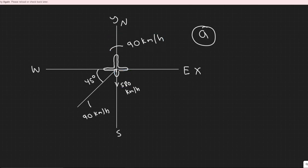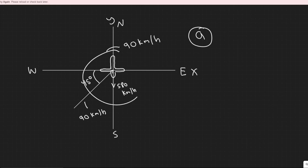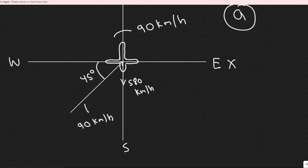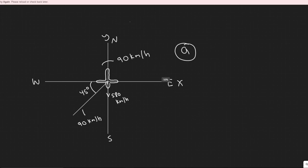Once we have all components summed, we can use a formula to get their magnitude, which will be the magnitude of the speed of the plane. We're looking at two components. One is the speed of the plane itself, and we're working in the x and y directions. I'm going to indicate negative for downwards, positive for upwards, positive to the right, and negative to the left.